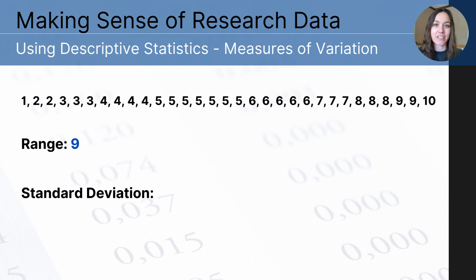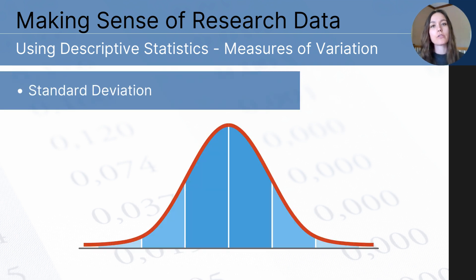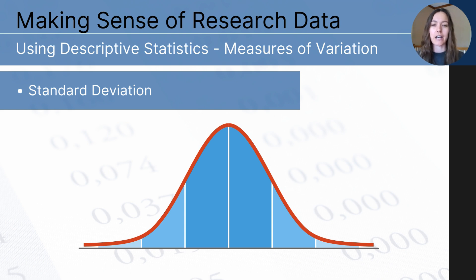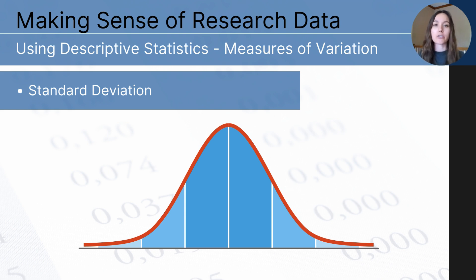So 9 is our range — the difference between the highest and lowest score. You won't be calculating standard deviation, but you will want to know what it is, how it works, what its purpose is, and what it can tell us about a data set. Standard deviation, like range, helps us describe and understand the variation of our data set. It helps us understand how spread apart our data points are from one another and from the mean — if standard deviation is high, numbers are spread apart; if low, they are more closely compacted.